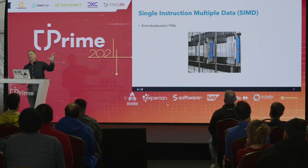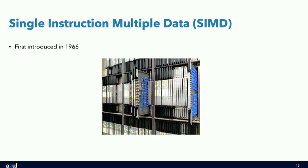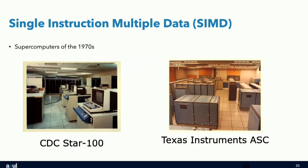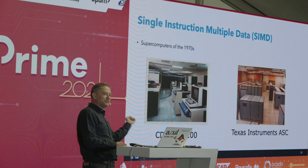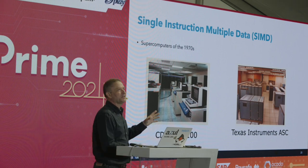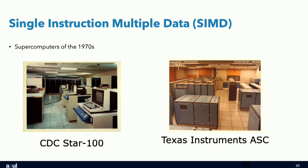This goes back a long way. Early machines using SIMD include the ILLIAC IV from 1966, the CDC Star-100, and the Texas Instruments ASC. These machines took up a whole room yet had less computing power than a modern mobile phone — good to see how things have improved.